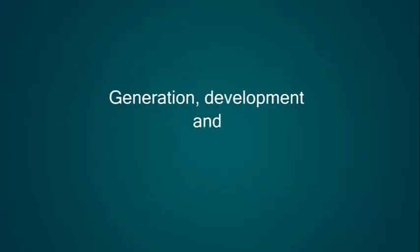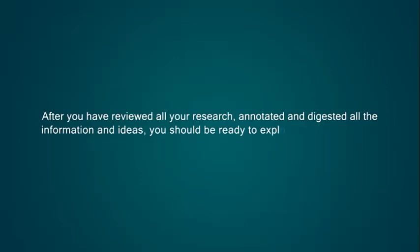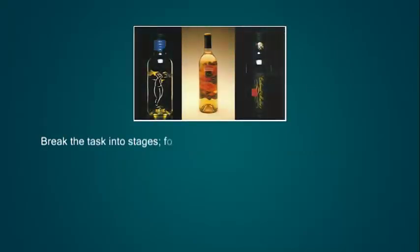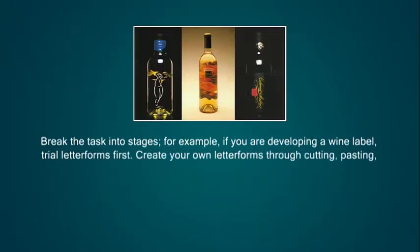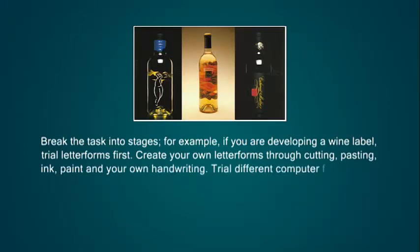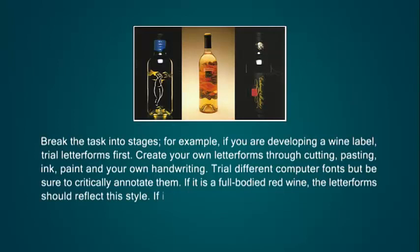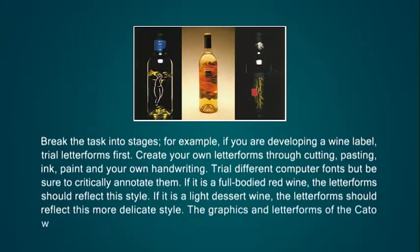Generation, Development and Refinement of Ideas: after you have reviewed all your research, annotated and digested all the information and ideas, you should be ready to explore a range of ideas. Decide which final presentation you would like to start developing ideas for. Break the task into stages. For example, if you are developing a wine label, try letter forms first. Create your own letter forms through cutting, pasting, ink, paint and your own handwriting. Try all different computer forms but be sure to critically annotate them. If it is a full-bodied red wine, the letter forms should reflect this style. If it is a light dessert wine, the letter forms should reflect this more delicate style.